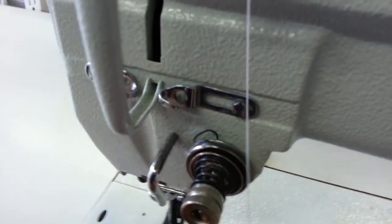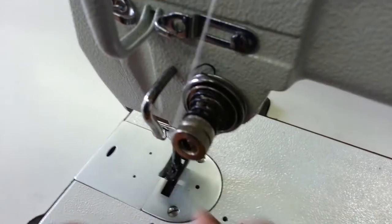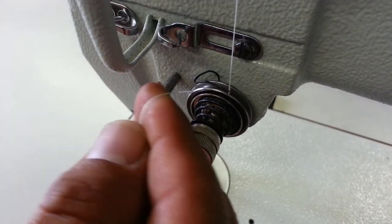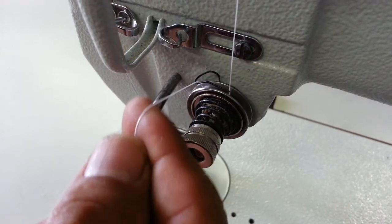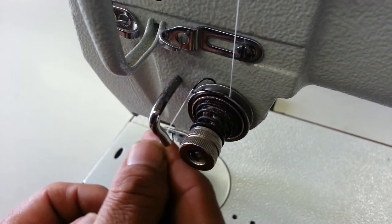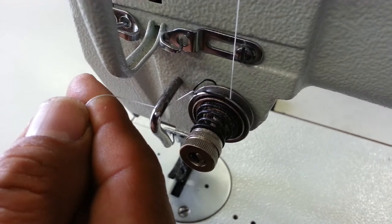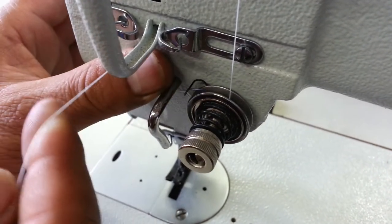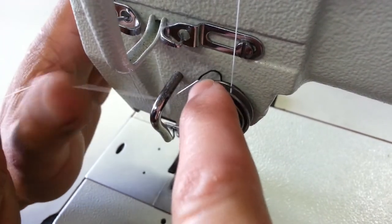Now the next step is important to make sure that your presser foot is in the up position. You're going to go under and over that check spring. So you're going under the tension, through the discs, and then over the check spring. The check spring is that piece that's moving up and down. This is your check spring.